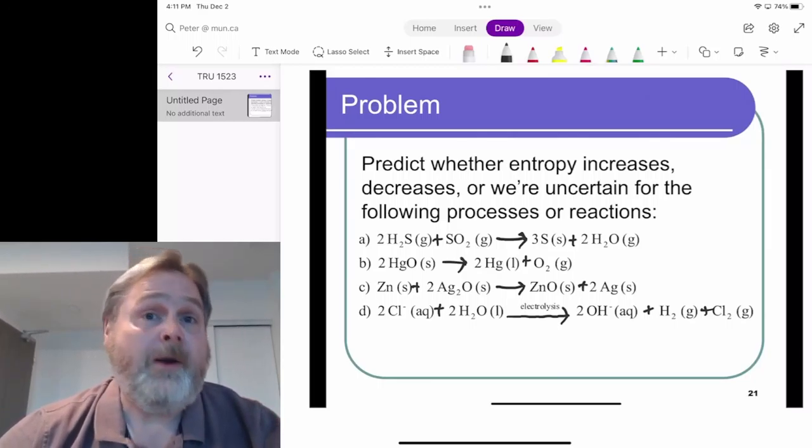In the first reaction, we've got two hydrogen sulfide gas plus SO2 gas, giving us three solid sulfur and two water gas. That solid sulfur is in a little clumpy pile. We've tried to restrict the motion of molecules, but the way to approach this problem in our understanding is just look at the number of stoichiometric coefficients of gas on each side in that case.